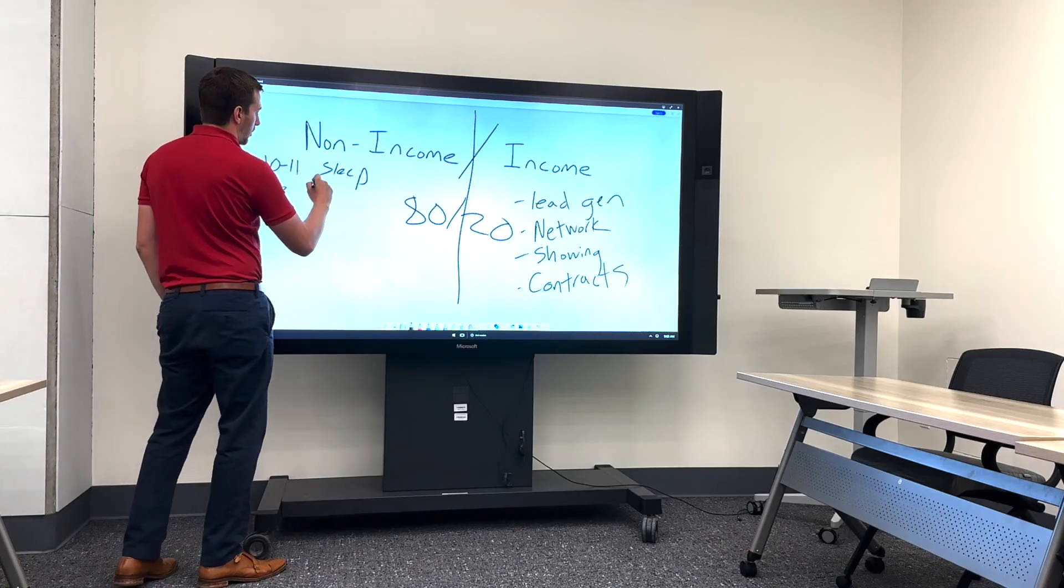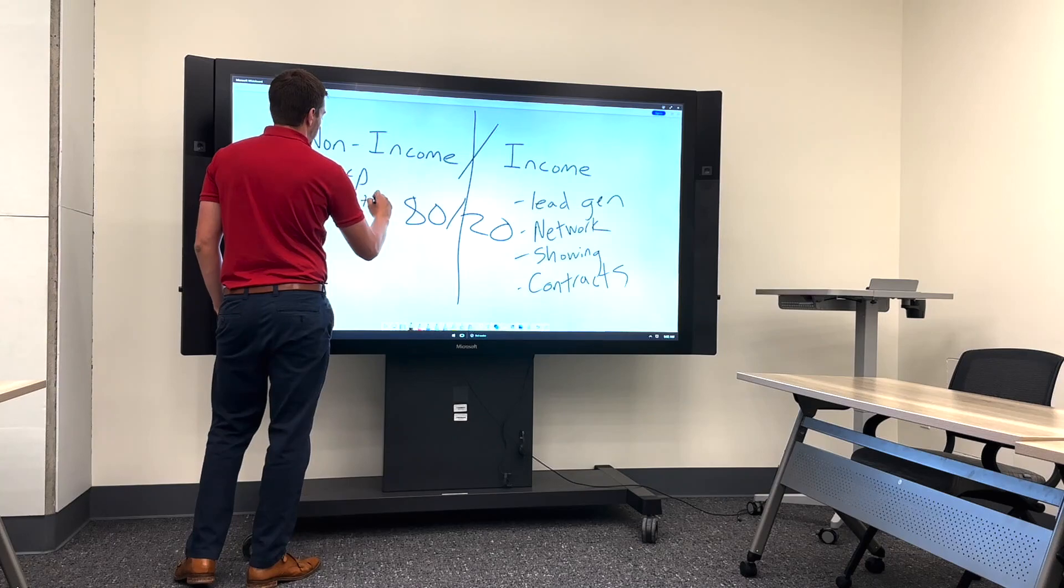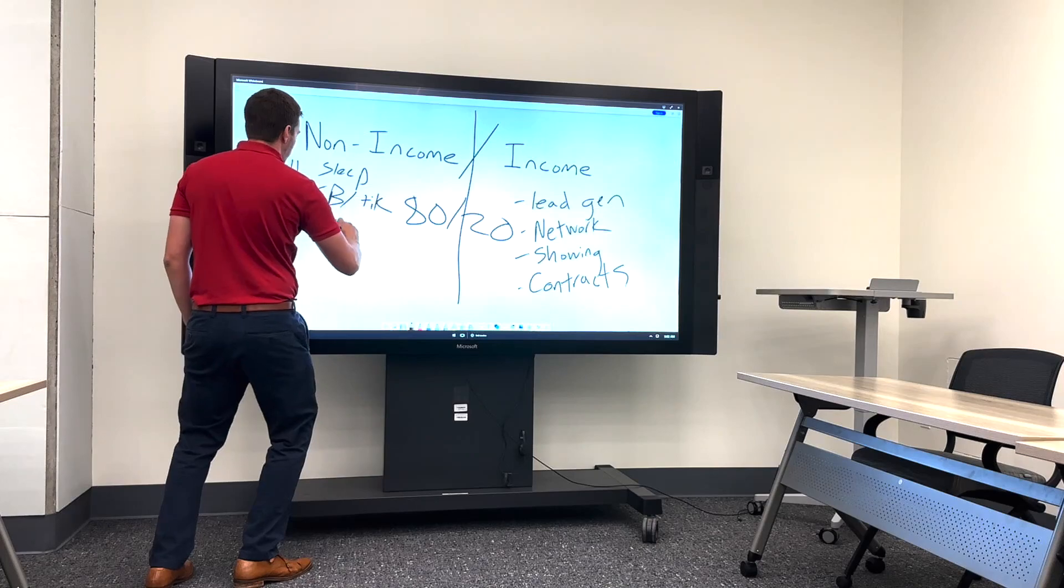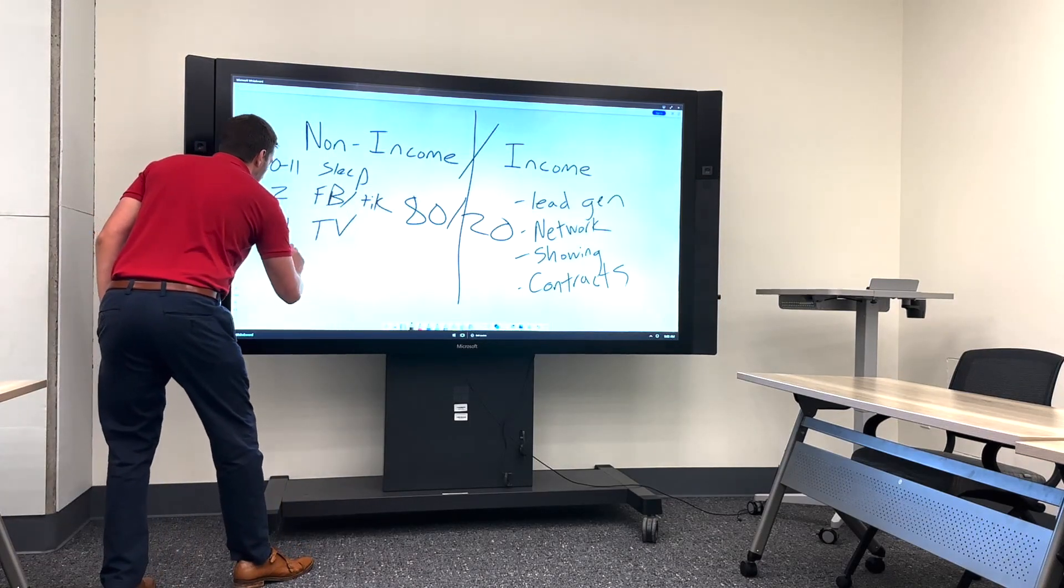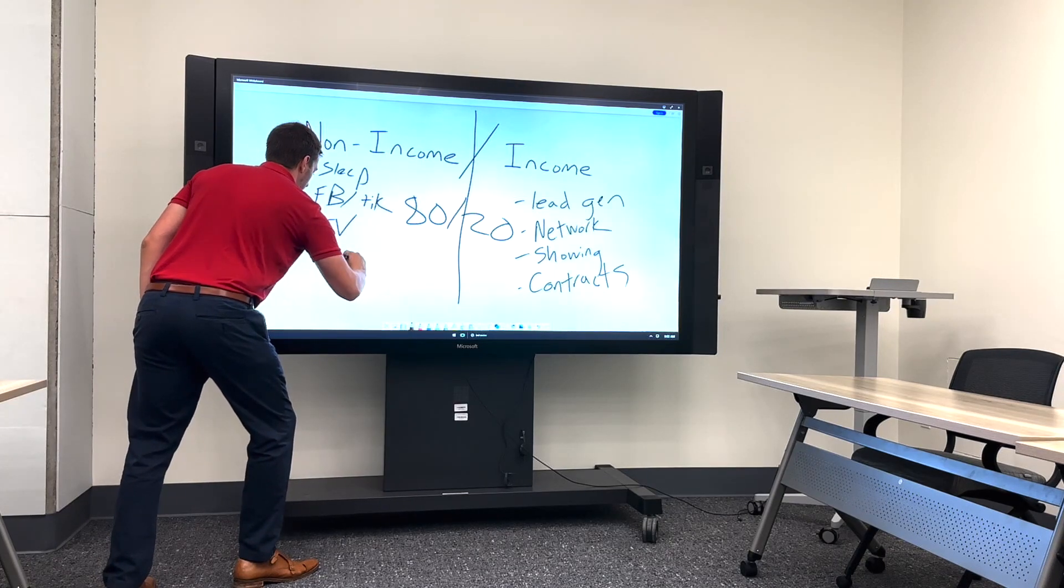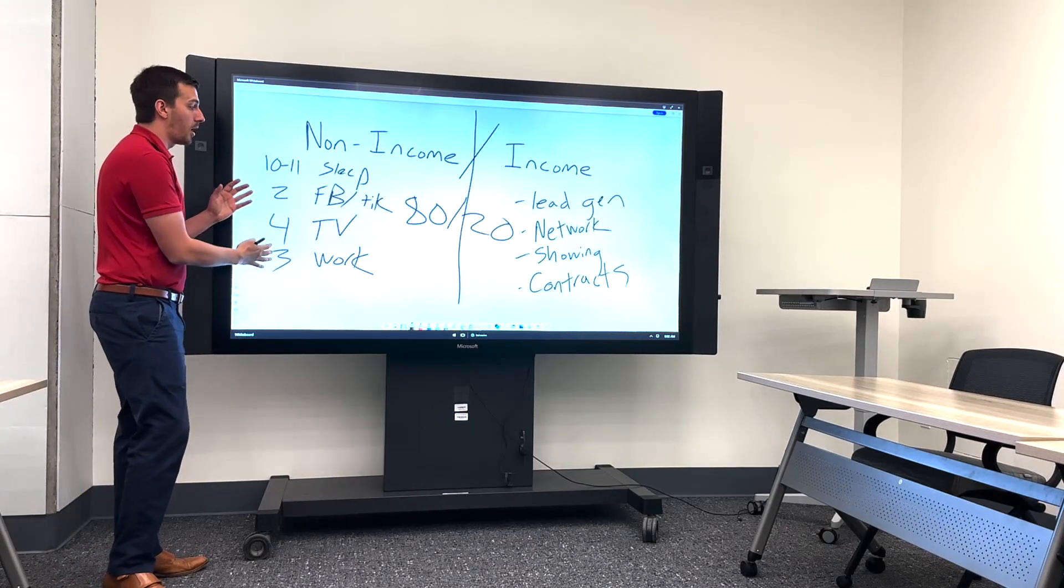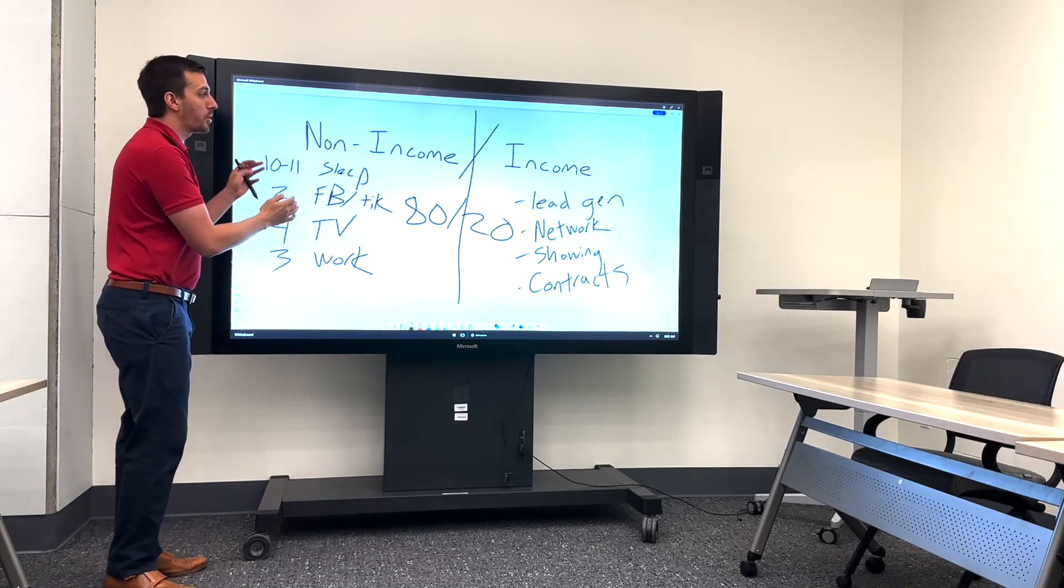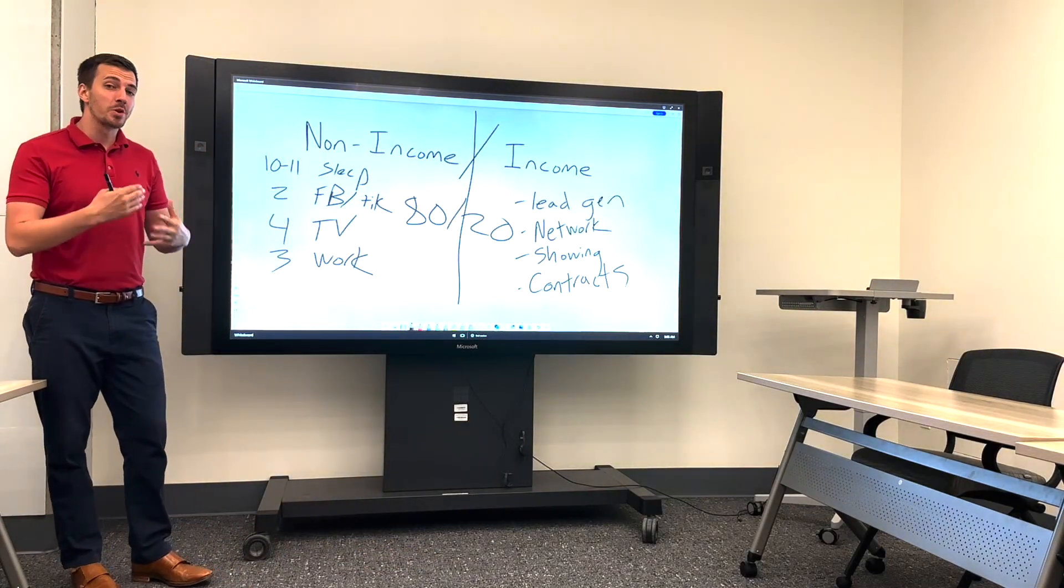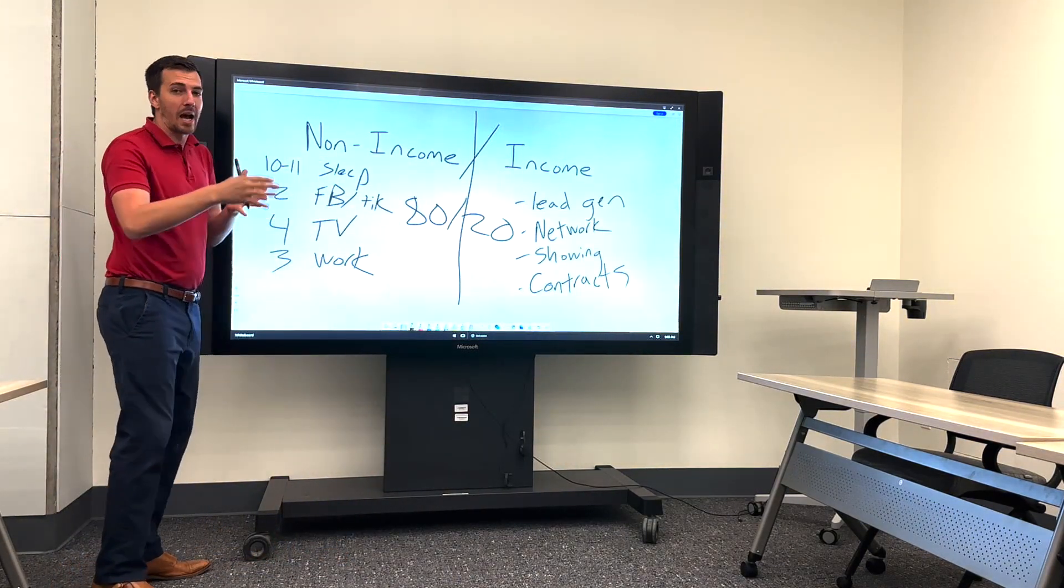Maybe we're checking Facebook for two hours, or social media, or TikToks. Maybe we're spending four hours a day watching TV. Maybe we're working out for three hours a day. And so as you can see, over half of our day is already gone on things that are not producing income in our business. We want to, as small business owners, as real estate agents, we want to be on this side. Because being over here is a quick way to get out of the business.